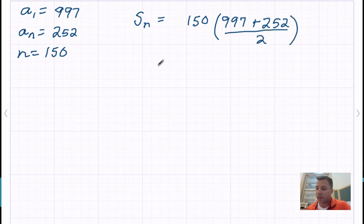And when you do that, you get a decent-sized number. You get 93,675.